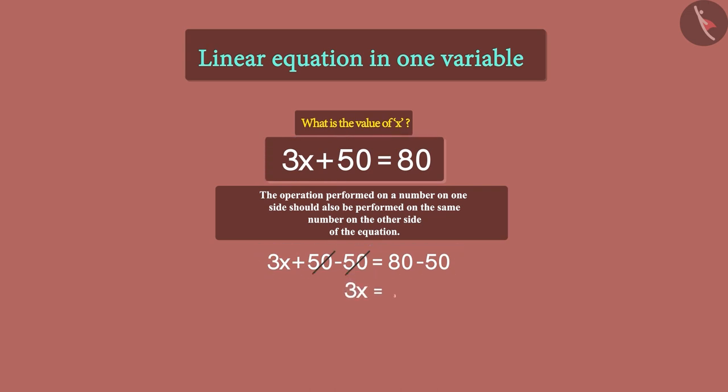What we get is 3 times x is equal to 30. So, what should our next step be? Yes. We need to get rid of this 3. As 3 is being multiplied by x, we can get rid of 3 by dividing the term by 3.